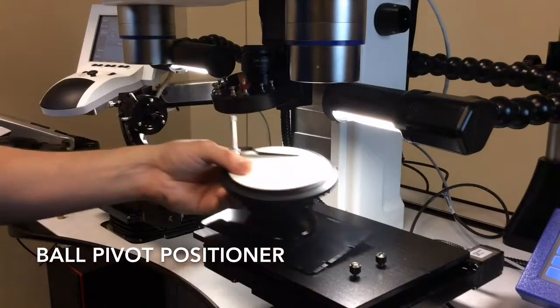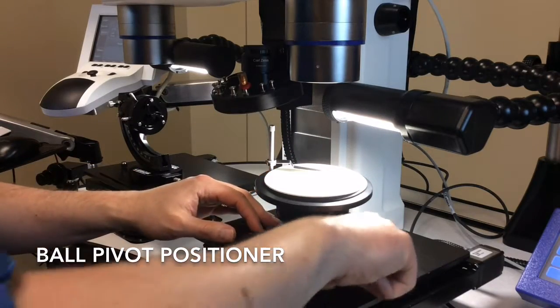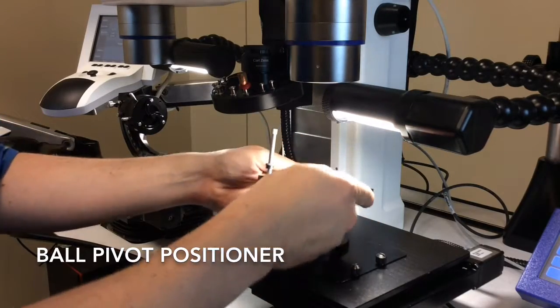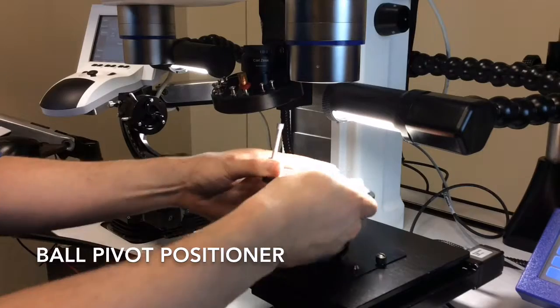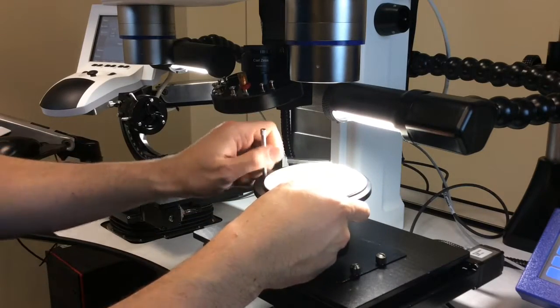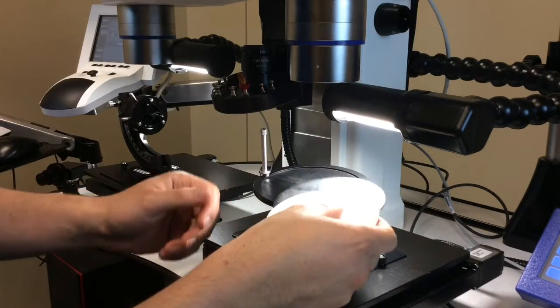The next holder to go over is our ball pivot positioner. This is a large ball pivot positioner that, like the ball pivot vise, lets you rotate and tip as you need for your evidence. It also has a clutch mechanism in the bottom to loosen or tighten depending on the weight of your evidence. The ball pivot positioner also comes with a little stage clip as well as a reflective white and black plate for sample contrast.